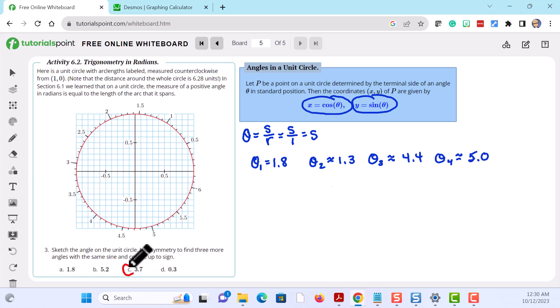So let's try part c next. We have a radian measure of 3.7. So again we start at the point (1,0), measure counterclockwise until we get to 3.7, which is down here in the third quadrant.